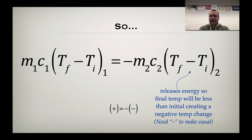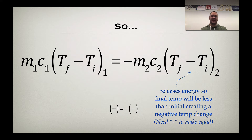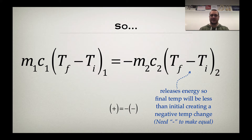So on the right-hand side, if we get the material to release thermal energy, that means its final temperature has to be less than its starting temperature. So that delta T is negative, which is again why we have that negative on the right-hand side, because negative times negative gets you a positive.